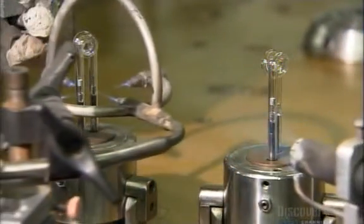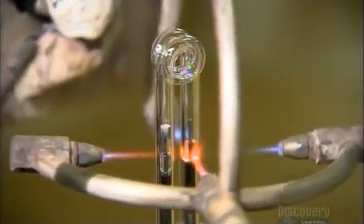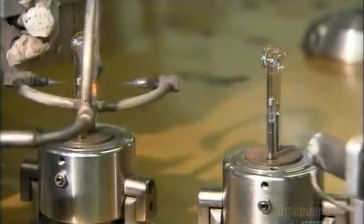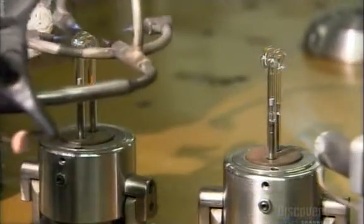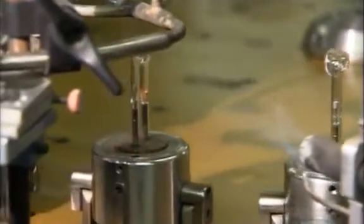Now the machine takes over. It vacuums out the air in the tube, then injects xenon gas, then melts the glass tube closed under the electrodes, then cuts off the excess glass.